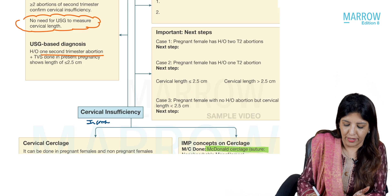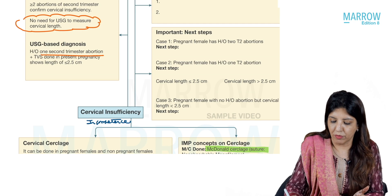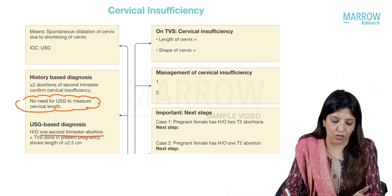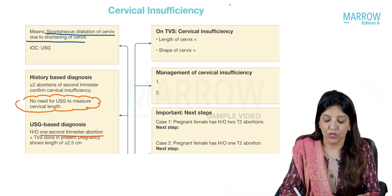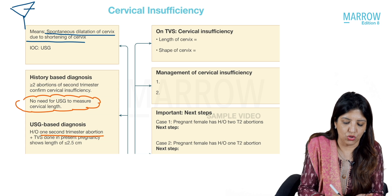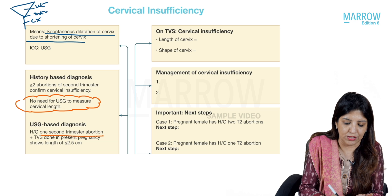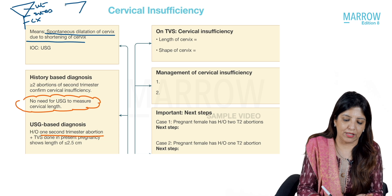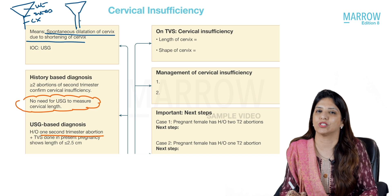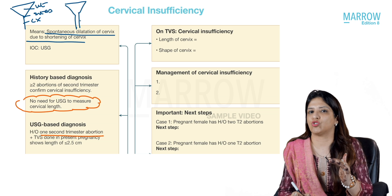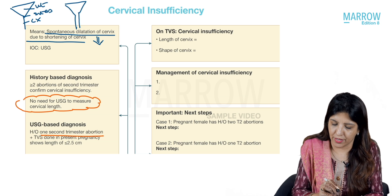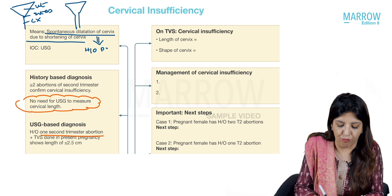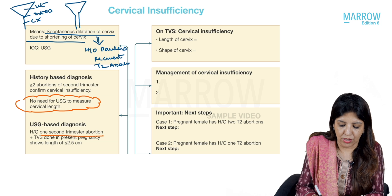Cervical insufficiency or cervical incompetence means there is spontaneous dilatation of the cervix. Normally the internal os is closed — the uterus above, cervix below, and internal os at the junction. But in patients with cervical insufficiency, automatically the internal os dilates, and that leads to second trimester abortions. In cervical incompetence, you will always get a history of painless recurrent second trimester abortions.